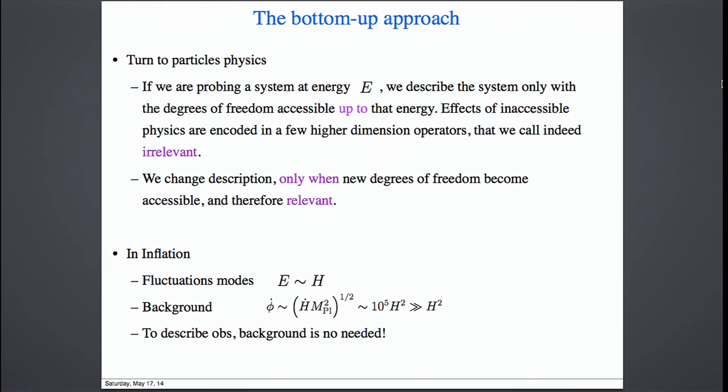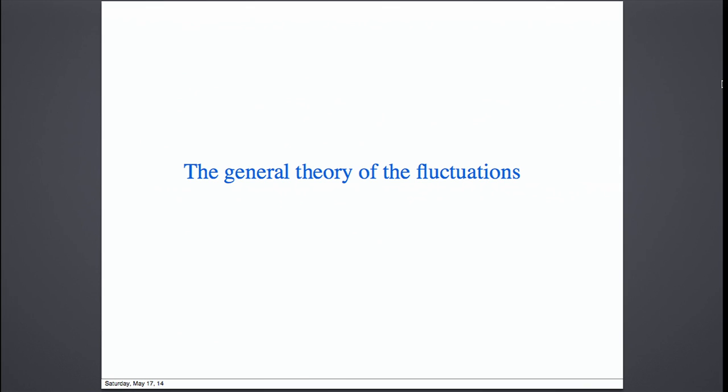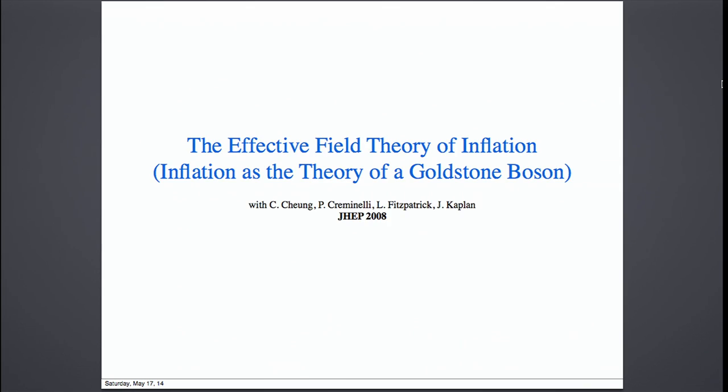In inflation, the fluctuations that we observe have an energy of order Hubble. The background phi-dot is about 10^5 Hubble squared by the power spectrum normalization, which is much bigger than Hubble squared. So in order to describe inflation, since what we observe are the fluctuations, the background is not needed — one can just focus on the fluctuations. This motivates developing the general theory of the fluctuations, which goes under the name of the effective field theory of inflation, or inflation as the theory of a Goldstone boson. Inflation is really a quasi-de Sitter epoch where there is a physical clock measuring time and determining when inflation ends.